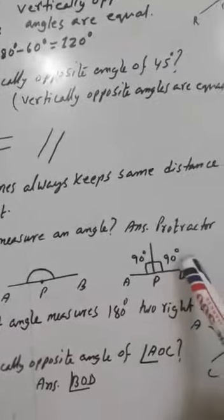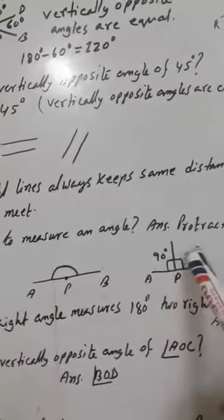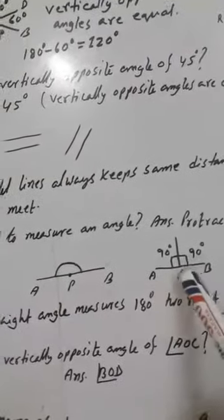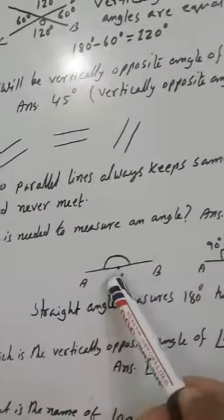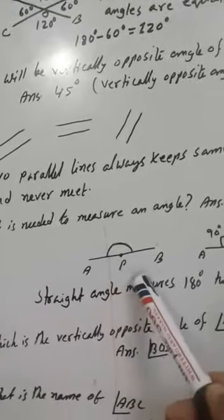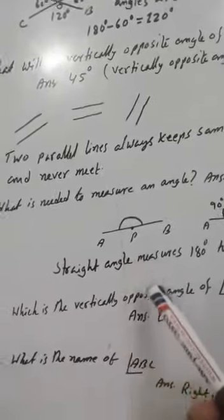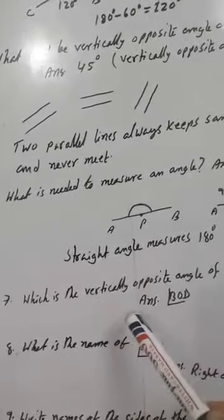This angle is 90 degrees and this angle is 90 degrees; both together are 180 degrees. This angle also measures 180 degrees, and this is called a straight angle.